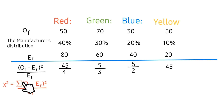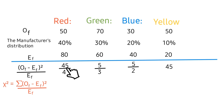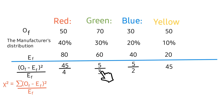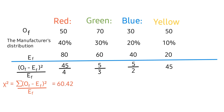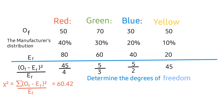Since this symbol means summation, we sum all the values: 45/4 plus 5/3 plus 5/2 plus 45. Our calculated chi-square statistic is 60.42.